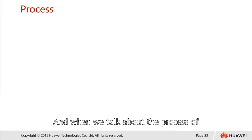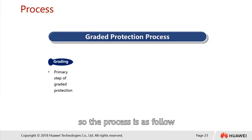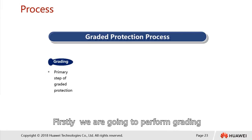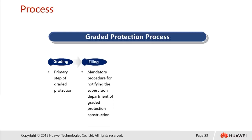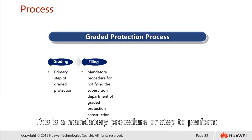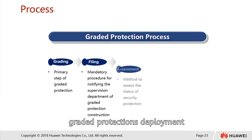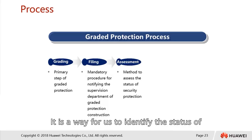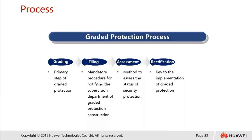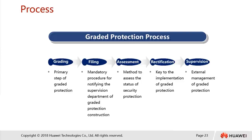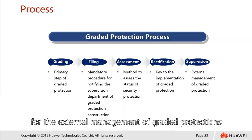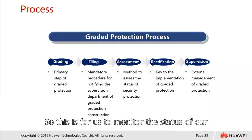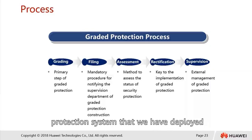When we talk about the process of performing graded protections, the process is as follows. Firstly, we perform a grading — this is the first step of grading protections. Next, we do filling, which is a mandatory procedure to perform graded protections deployment. Then we go into assessments, which is a way to identify the status of our security protections. Rectification is needed if the graded protections provided are not sufficient. Finally, supervision is required for the external management of graded protections to monitor the status of the deployed protection system.